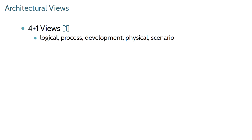One of the early architectural views descriptions was by Philippe Kruchten, and he developed what he calls the four plus one views. The four are logical, process, development, and physical views, looking at the structure of your actual architecture. Logical is literally the logical structure of your system.